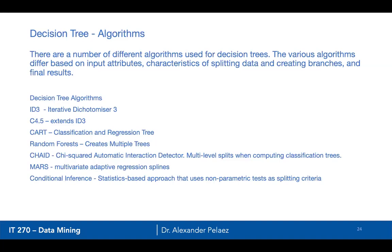Random forests actually creates multiple trees. It takes a large set of data, takes a sample, creates a tree, takes another sample, creates a tree, and so on — sometimes with overlapping data. That's why it's called a forest: it aggregates all the information to determine which ones perform best.